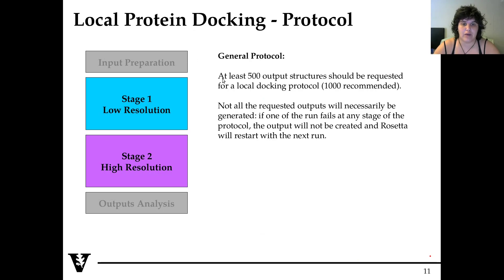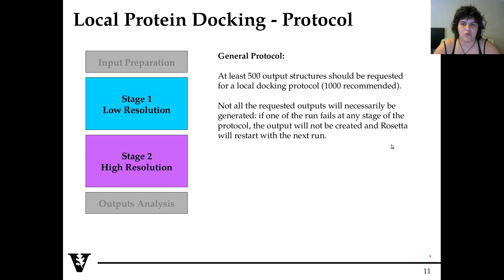About numbers: for your application, you should require at least 500 output structures for protein-protein docking; 1000 is recommended. But in our tutorial, producing one will take 30 minutes, so we will just produce 10 outputs in order to show you how it works. If you are really doing this in real life, you should at least go up to 500 and have a good cluster to run things in parallel. Also note that not all requested outputs will necessarily be produced — if the Monte Carlo doesn't accept the structure, it will not be produced. So you may end up with 8 instead of 10 — this is normal.